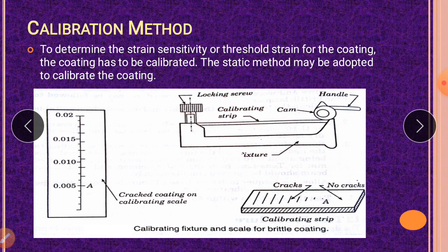So since we are using the aluminum strip, it is having some strain. So it is equal to the strains which are developed in the coating. Like that it is going to be calibrated. The calibration strip can then be removed from the loading fixture and placed alongside the calibrating scale from which the incipient crack strain can be read. So we can read the crack strains.